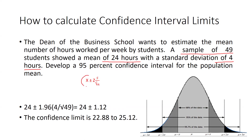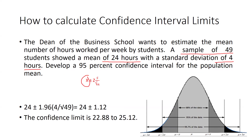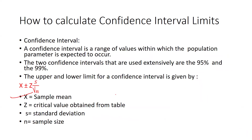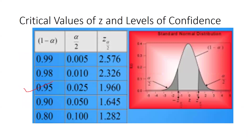Our sample mean x is 24. We use plus or minus z times s divided by the square root of n. The z critical value for 95 percent is 1.96, taken from the z-table. As shown in the table: 90 percent gives 1.645, 98 percent gives 2.33, and 99 percent gives its corresponding value. For 95 percent, the table value is 1.96.